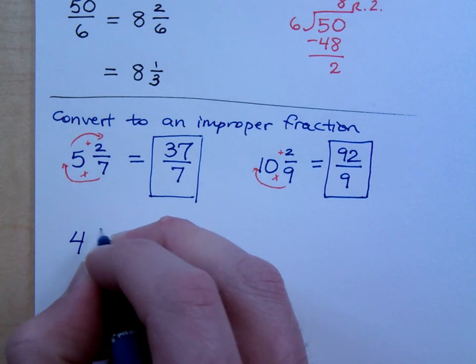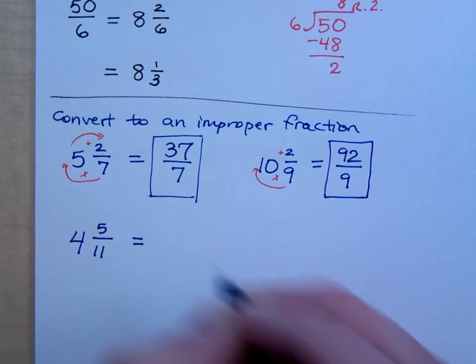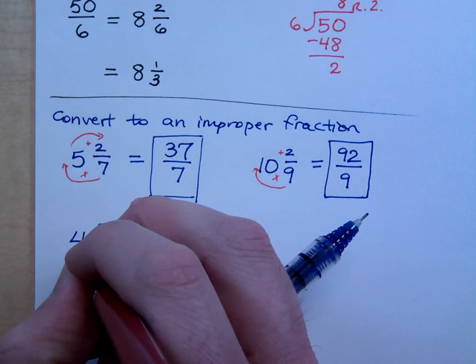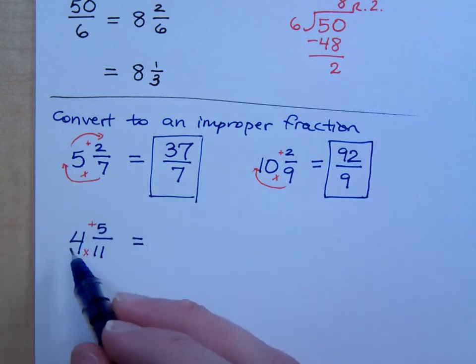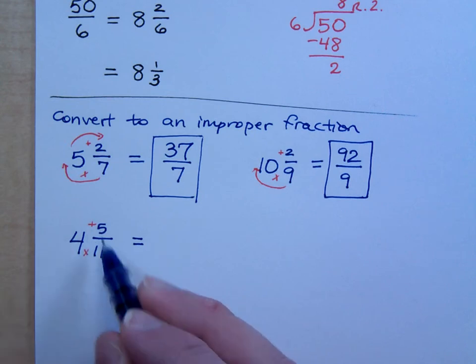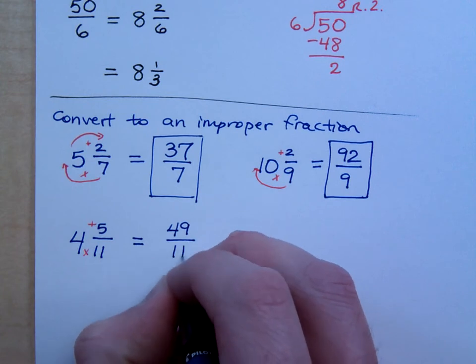If I have 4 and 5 elevenths, what is that guy? You've got to multiply the 4 times 11, and then you're going to add back in the 5. So 4 whole units, made up of 11 pieces each, so that's what? That's 44 plus the 5 is? So 49 over 11.